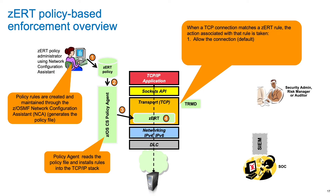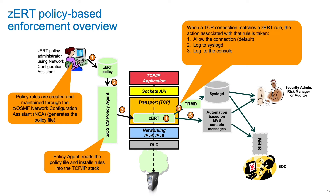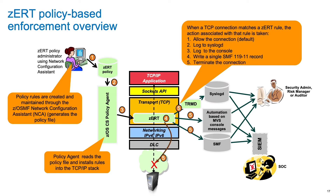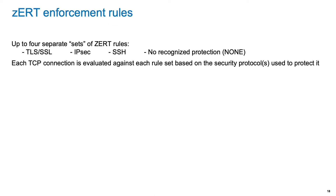Actions may include allowing the connection, which is the default, writing a message to syslogd, writing a message to the console, writing an SMF record for that connection, or even terminating the connection. ZERT rules are associated with a specific security protocol and are grouped into four rule sets: one for TLS, one for IPsec, one for SSH, and one for unprotected connections — which is essentially no recognized protection.